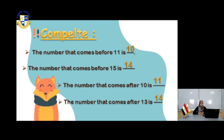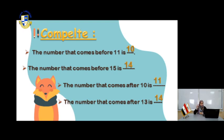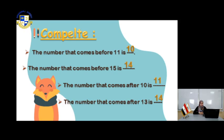For the last one: the number that comes after 13. What comes after 13? Count: 1, 2, 3, 4, 5, 6, 7, 8, 9, 10, 11, 12, 13 — I need the number after 13. It's 14. Super. So the number that comes after 13 is 14.